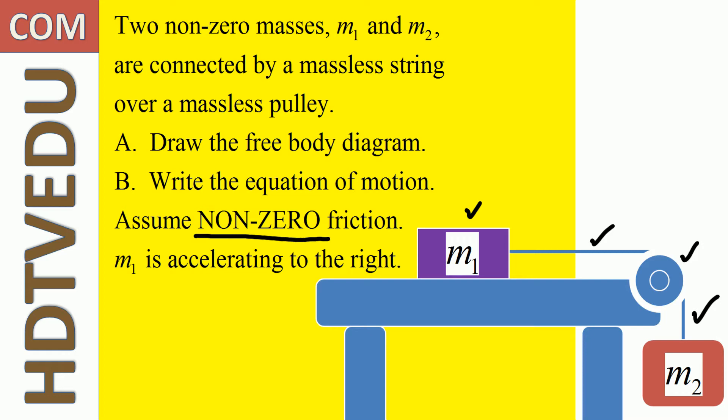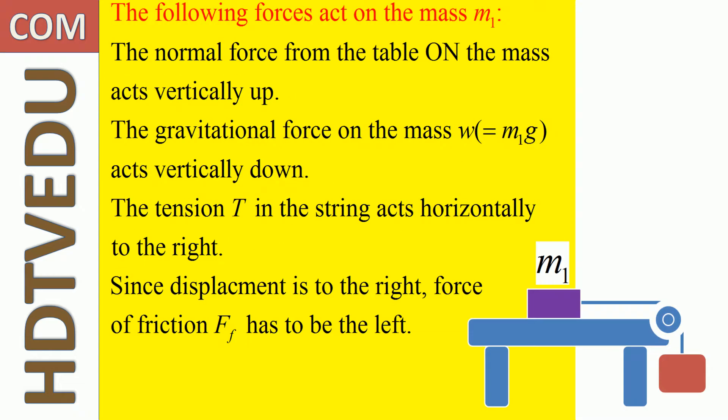We are told that m1 is accelerating to the right. The following forces act on mass m1: the normal force from the table acts vertically up, the gravitational force acts vertically down, and the tension T in the string acts horizontally to the right. Tension is a pulling force — it always pulls away from the object. If it acted to the left, it would be a pushing force, so tension must be to the right.